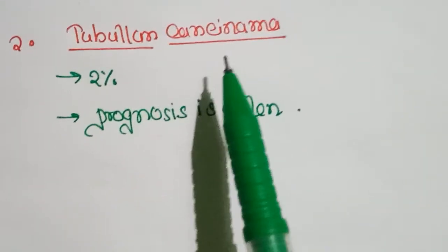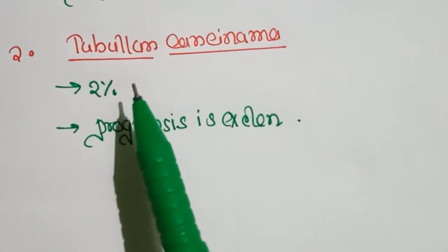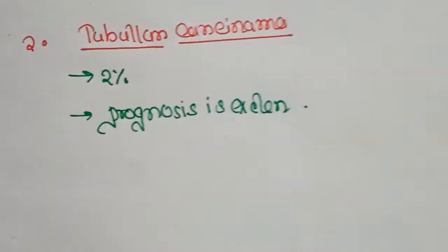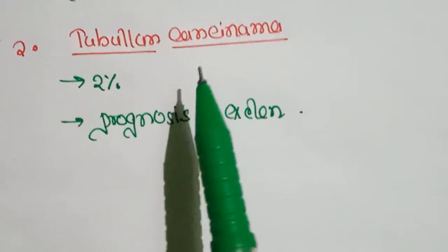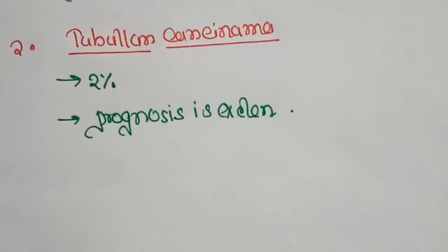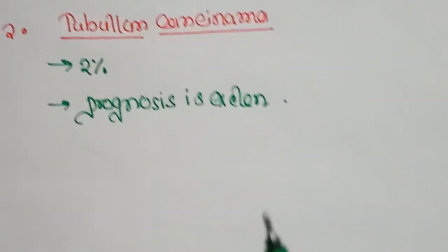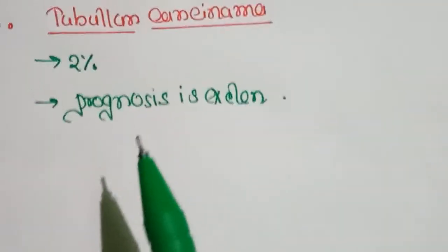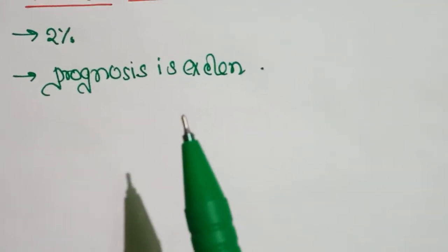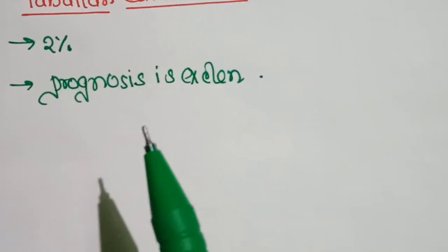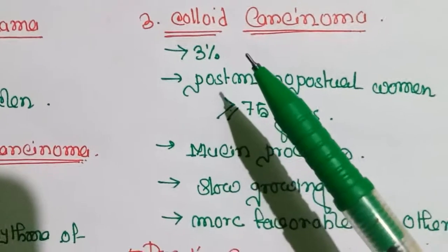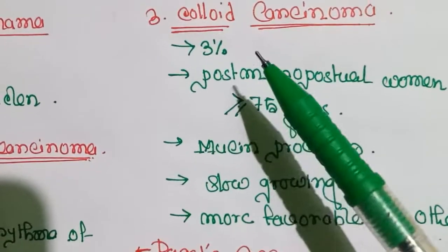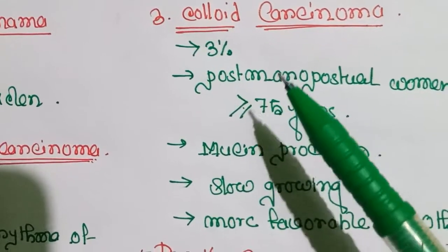Tubular carcinoma accounts for about two percent of breast cancer. Because axillary metastases are uncommon with this histology, the prognosis is usually excellent. Microscopically, invasive ductal carcinoma of the aggressive type is characterized by a high rate of axillary lymph node metastasis and skin involvement.